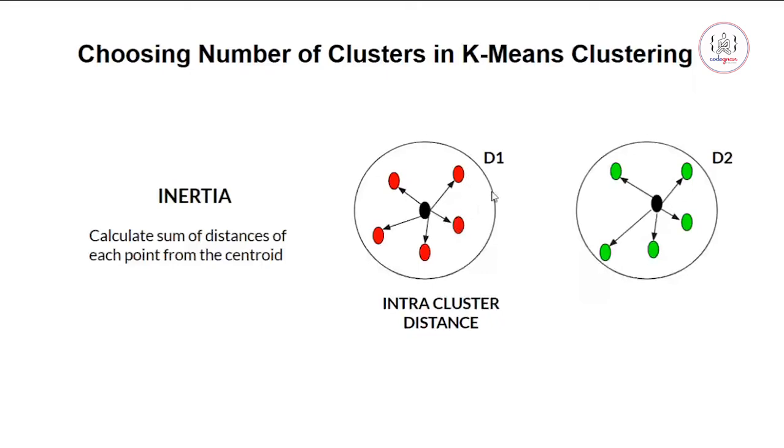Here we have this cluster centroid and these are the data points that are in our cluster D1. Here is the centroid of cluster D2 and these are data points in cluster D2. The distance between the centroid and all the data points should be as minimum as possible. This distance should be small, and the same is true for D2 as well.